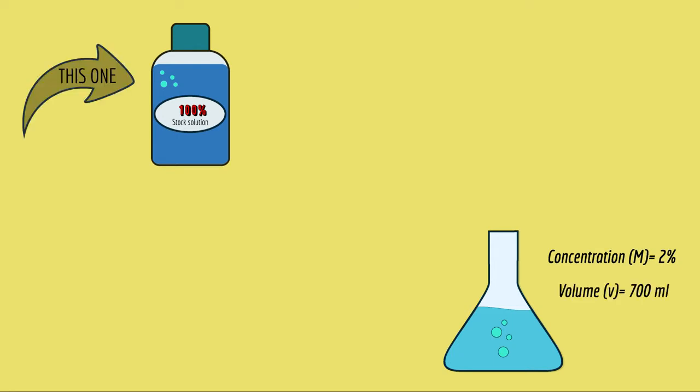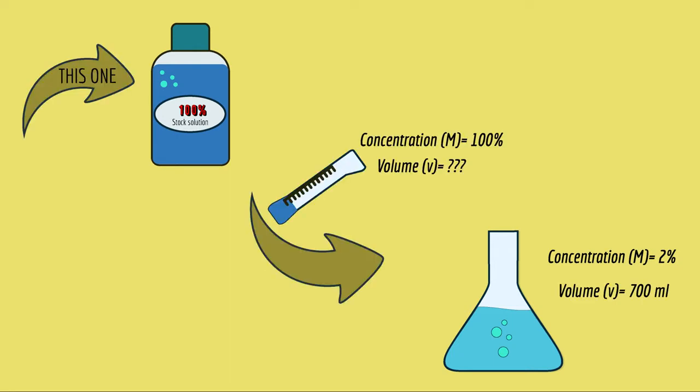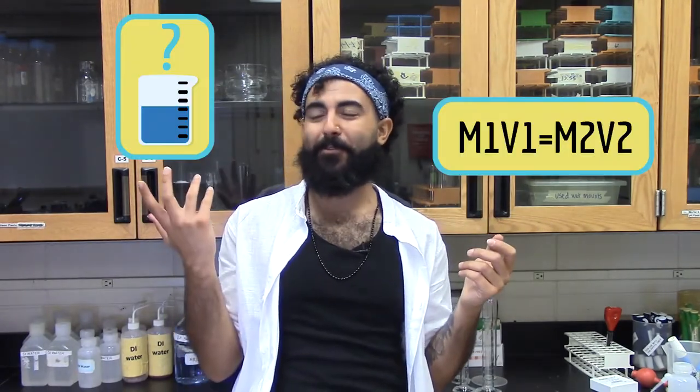So, let's say you start with a 100% stock solution, and what you need is a 2% solution in 700 ml. How much of this do you put in 700 ml to make a 2% solution? If that sounds hard to calculate, do not worry. I'm going to tell you about this solution that is going to be the solution to all of your solution woes.